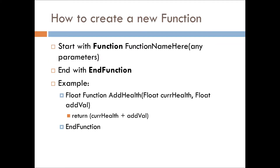So how do we create a new function? We have the built-in functions that Bethesda gives us for all of the objects, which we'll go into objects later. But you start with the function keyword, give it a function name of some sort, and then give it any parameters — we'll be going over what parameters are in a later episode. Then to end a function, you give it an endfunction keyword on its own line.